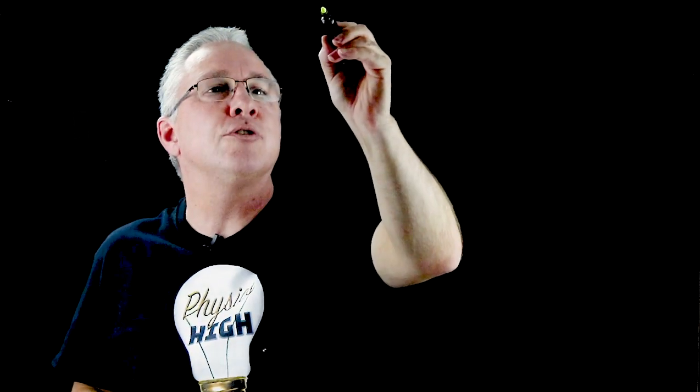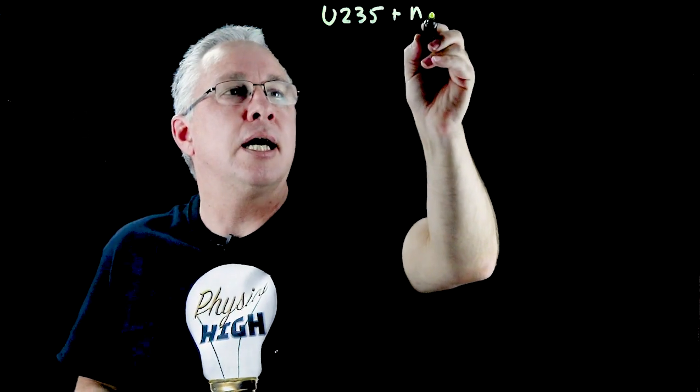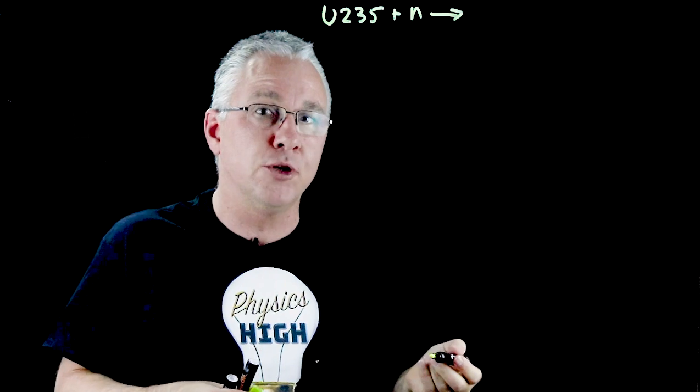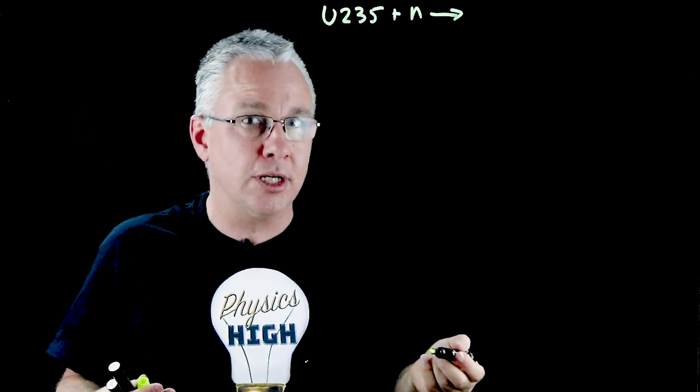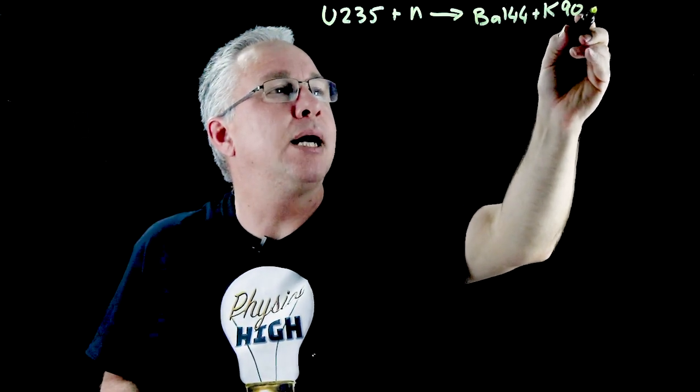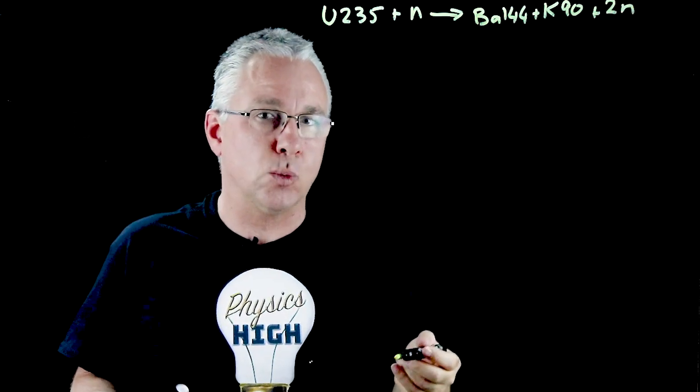The example we're going to use is uranium-235 encounters a neutron and then splits up into two daughter type of nuclei. In this particular example, the two daughter nuclei are barium-144 and krypton-90, but we also get two neutrons fired off as well.